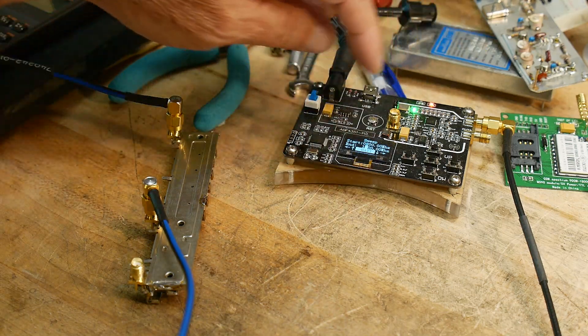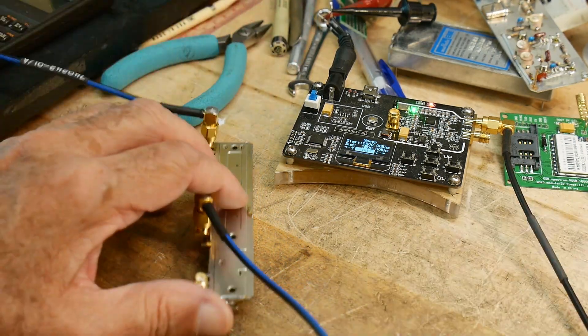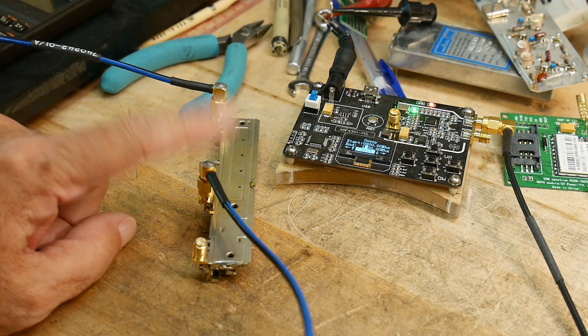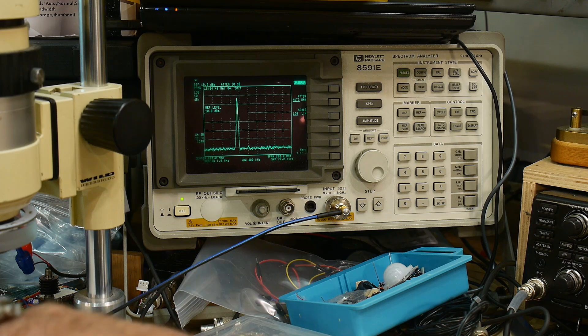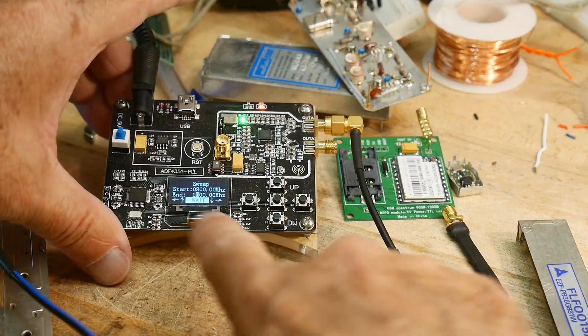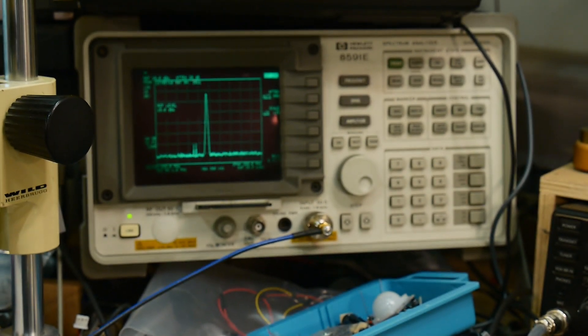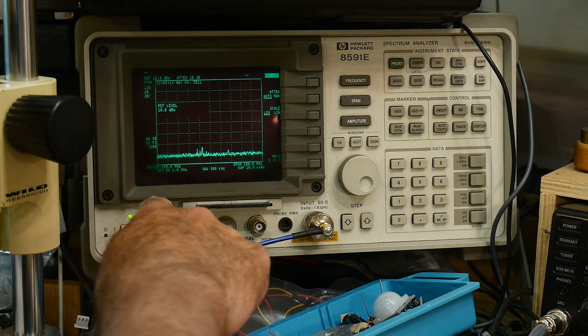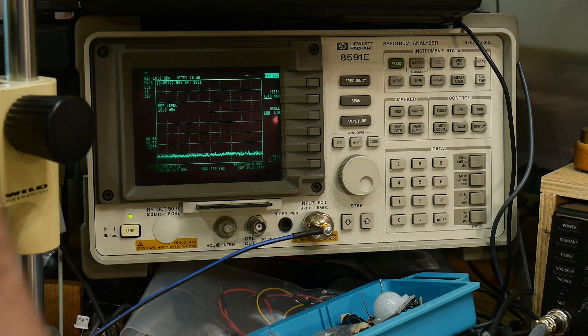Alright so I brought up my little sweeper here and I have it hooked up. I put in some SMA connectors on the filter so I can make easy connection to it. I'm taking the output of the RF generator into the antenna side in the middle, and then the transmit side is going off to the spectrum analyzer. I have the sweep set here from 800 to 1000 megahertz. Over here on the spectrum analyzer I'm showing 850 in the center and a 200 megahertz span.